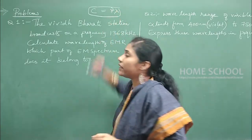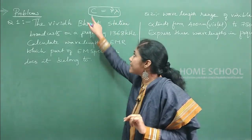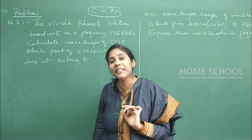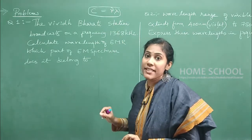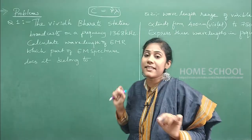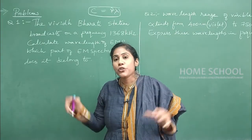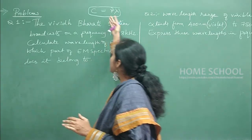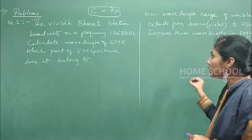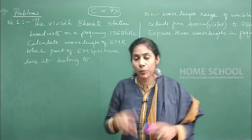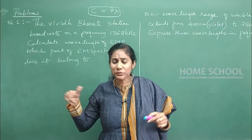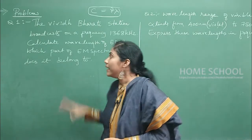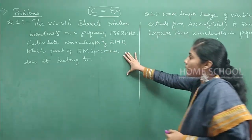This is a very important formula where c is the speed of light in vacuum, equal to 3×10⁸ m/s, ν is frequency, and λ is wavelength. Today we will discuss some numericals on this formula. I'll start with NCERT textbook problems and then go to competitive exam problems like NEET and JEE.